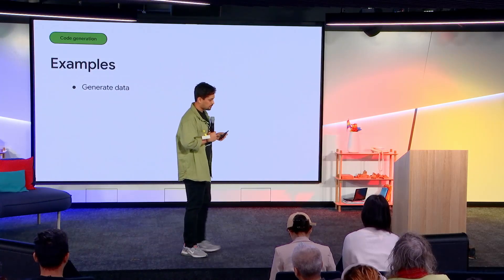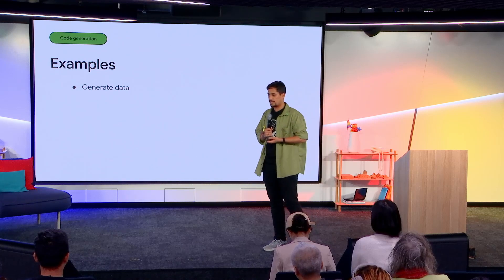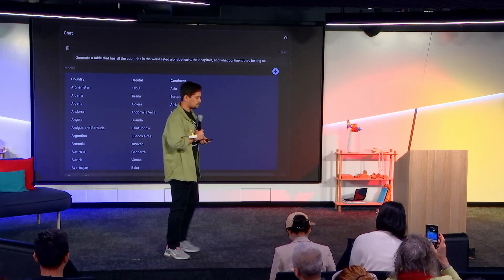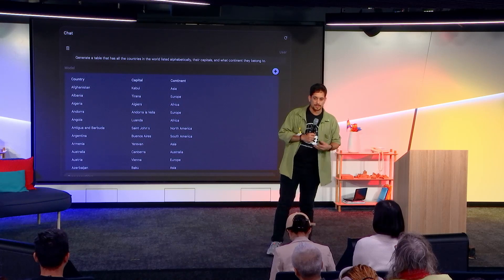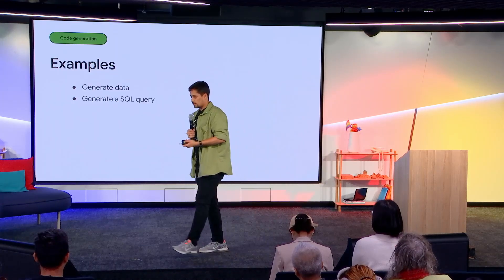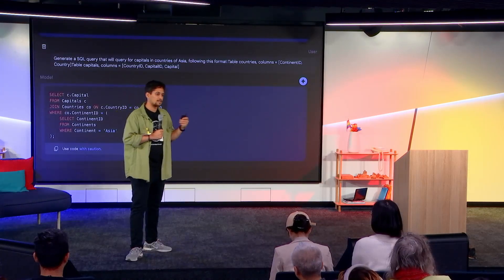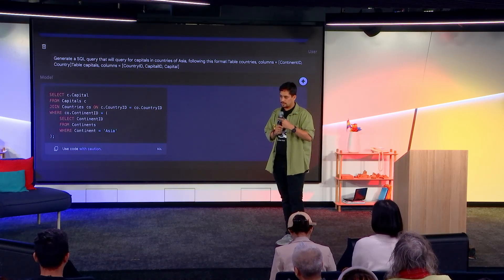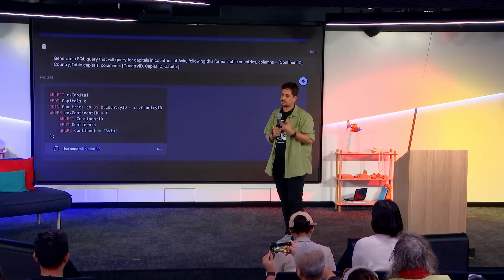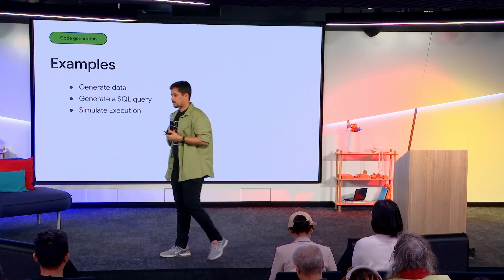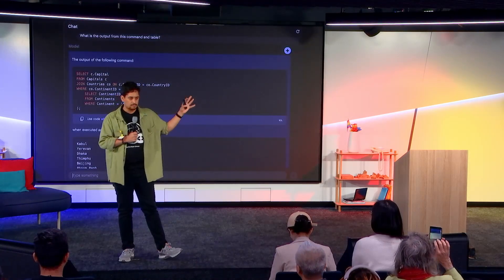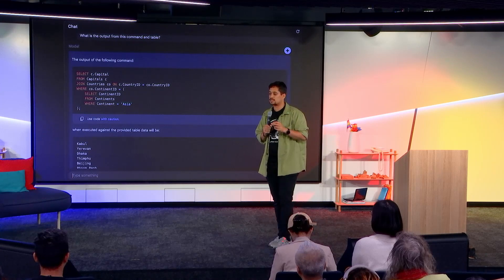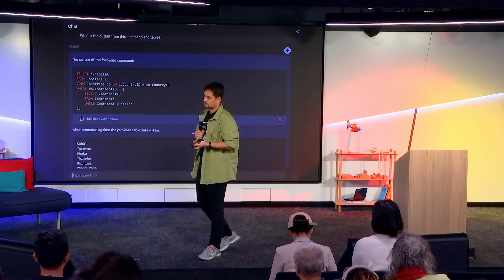Jumping to code generation — you can ask Gemini Studio to generate some fake data for you, literally just ask it. You don't have to program any of it. In this case we're asking it to generate some countries, capital cities, and their continents. Then you can generate an SQL query on top of it — you're not programming, you're asking Gemini to generate some code for you. Because of the nature of the prompt, it understands this SQL query has to be based on the previous data. It can even simulate execution of that query, though it won't actually run it since it's not backed by any SQL engine, so you could get wrong results.